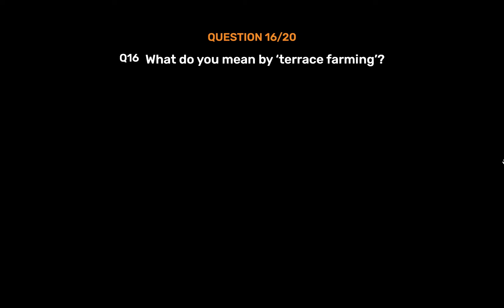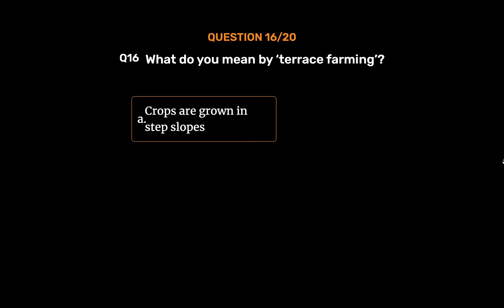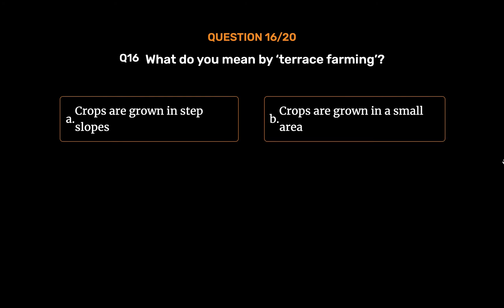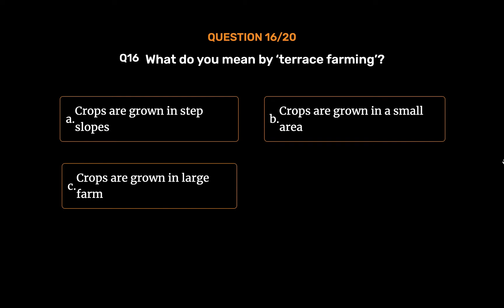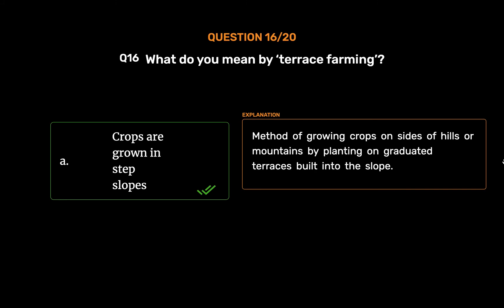Question number 16. What do you mean by terrace farming? Option A: Crops are grown in step slopes. Option B: Crops are grown in a small area. Option C: Crops are grown in large farms. Option D: None of these. The correct answer is Option A — crops are grown in step slopes. It is a method of growing crops on sides of hills or mountains by planting on graduated terraces built into the slope.